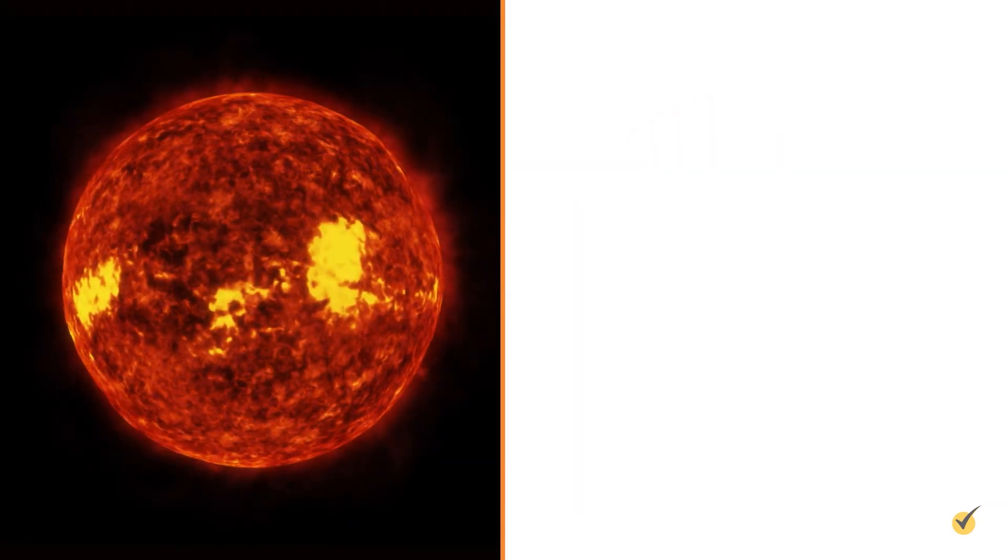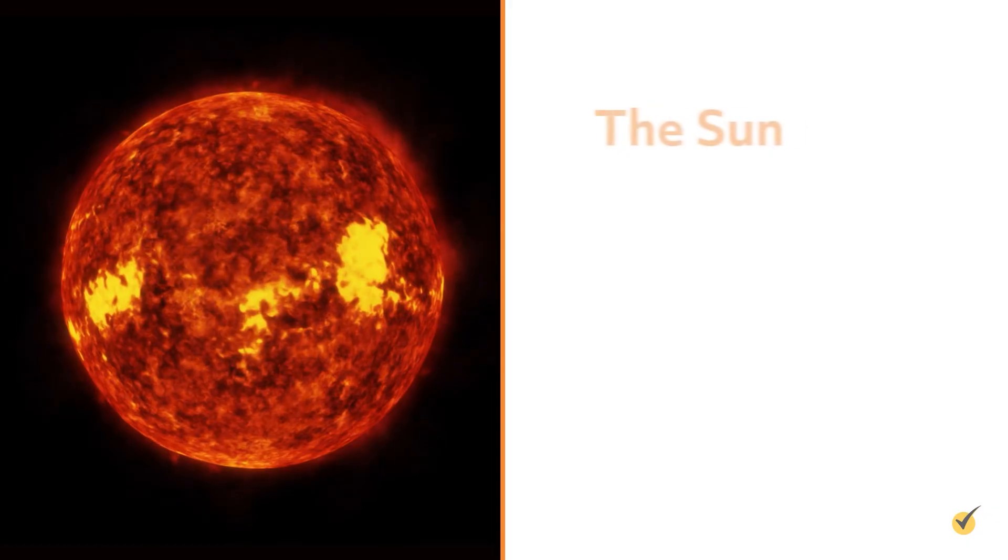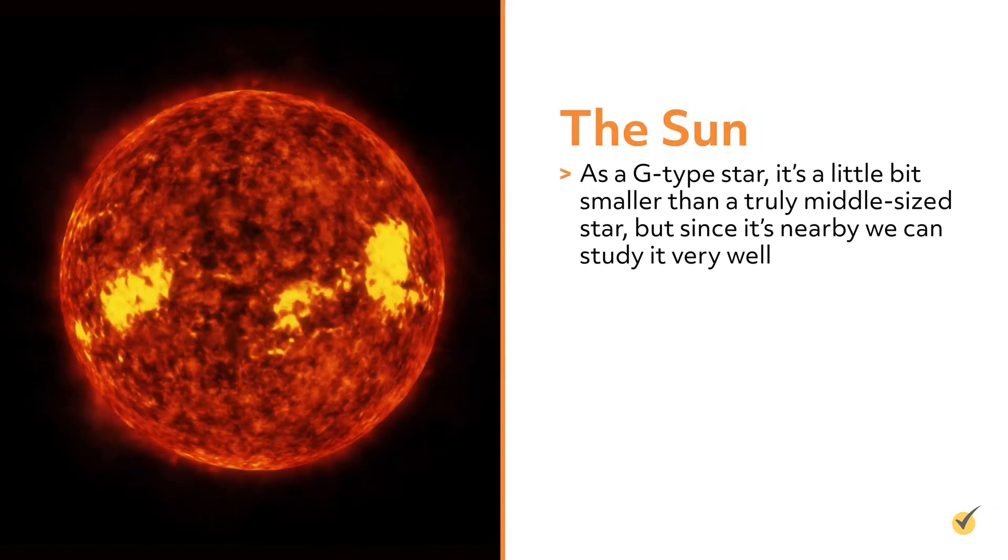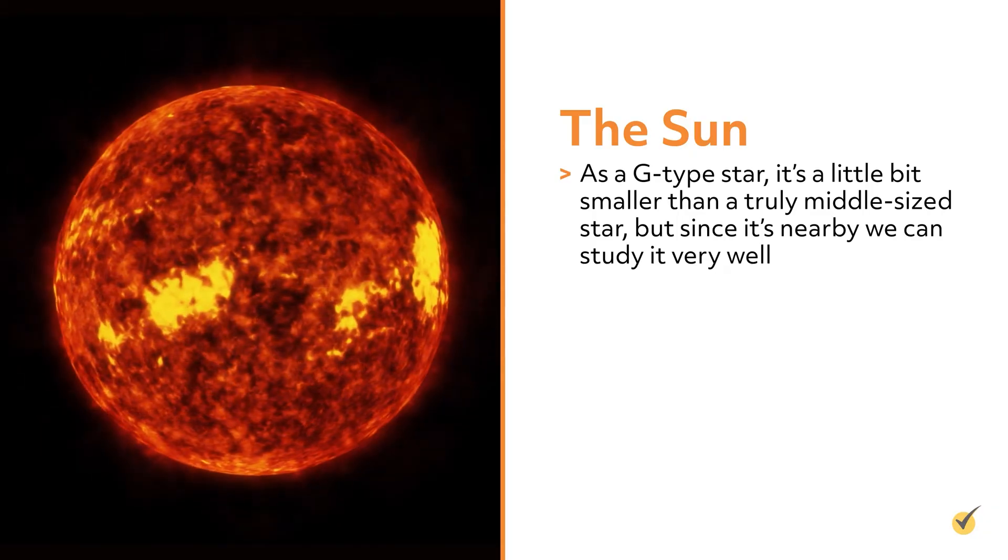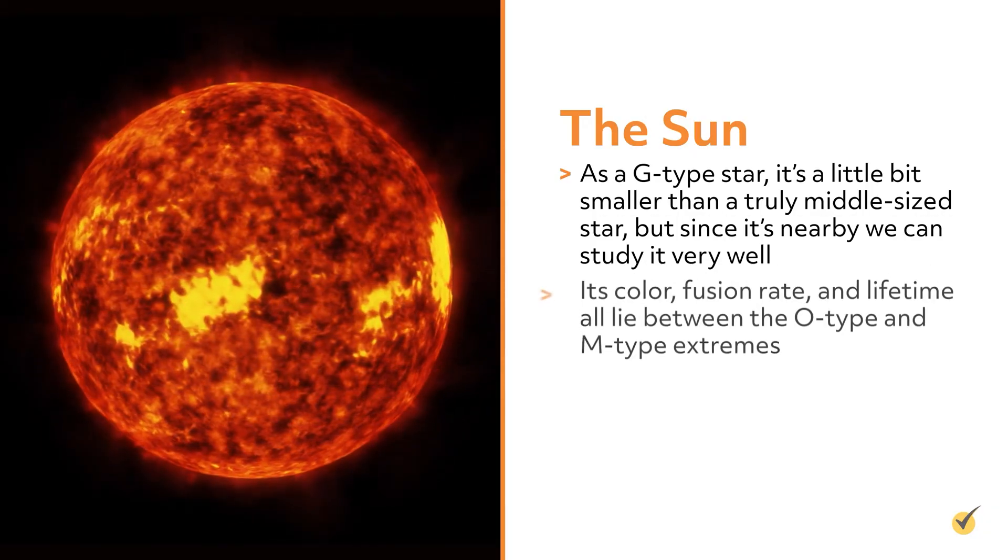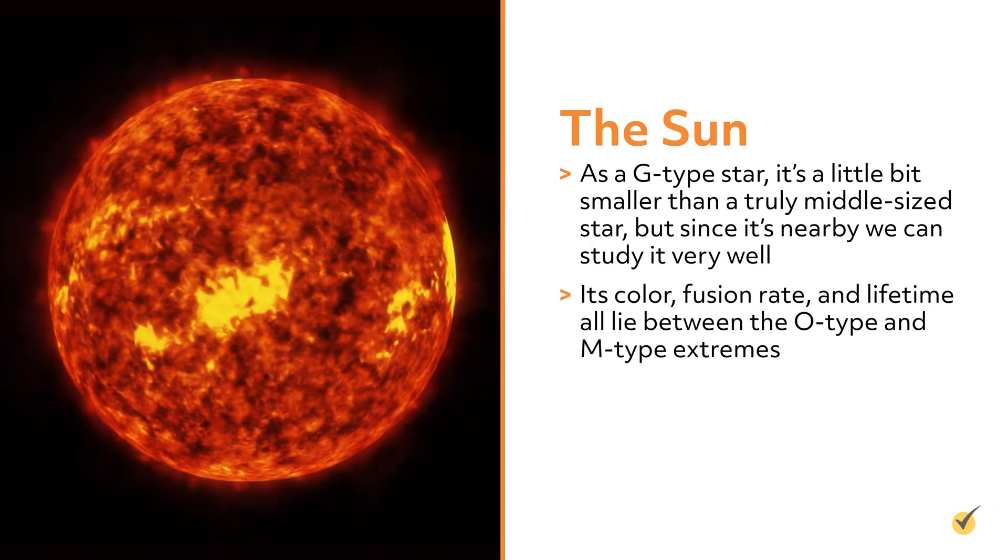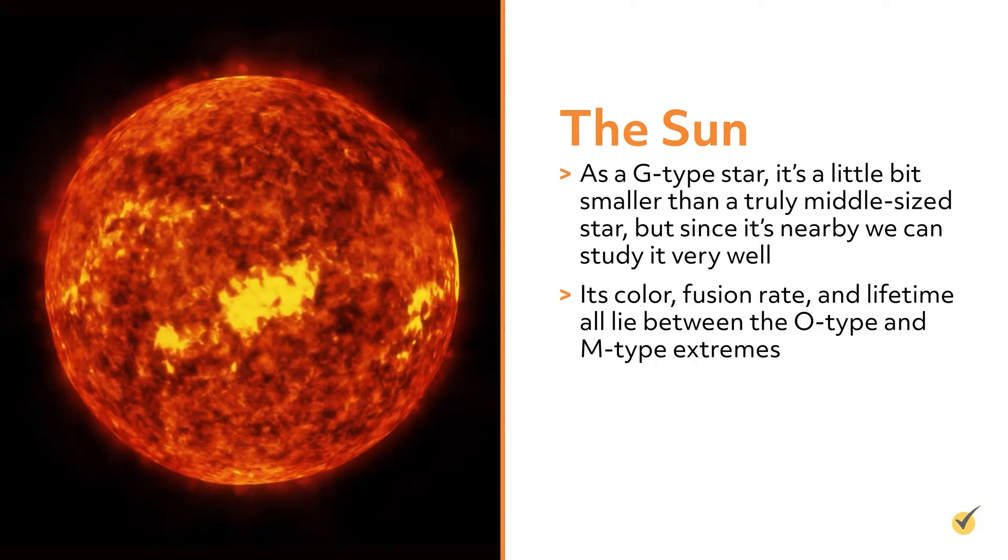One fantastic example of a middle-sized star is our Sun. As a G-type star, it's a little bit smaller than a truly middle-sized star, but since it's nearby, we can study it very well. Its color, fusion rate, and lifetime all lie between the O-type and M-type extremes.